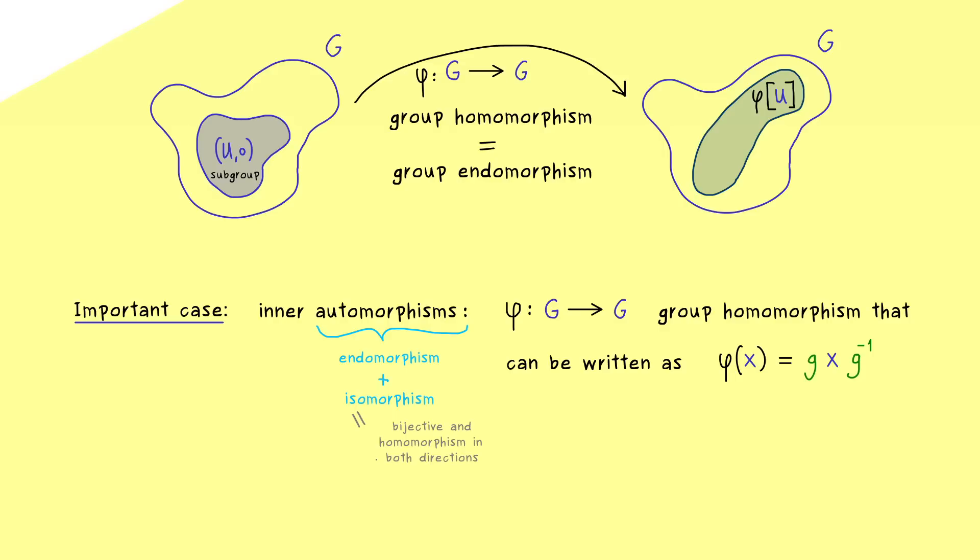And the term isomorphism you might have heard before because it's simply a homomorphism in both directions. Indeed this is important to remember. If someone says isomorphism they mean a bijective map that is a homomorphism in both directions. And now only the last part in the name remains to explain.